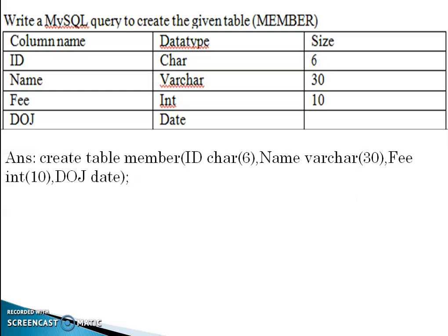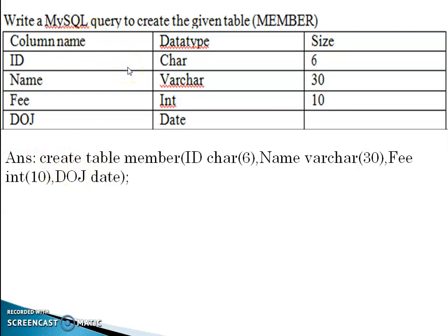Check this example — how to create a table query. Write a MySQL query to create a member table. The column names and data types are: id CHAR(6), name VARCHAR(30), phi INT(10), doj DATE. This is the answer for creating that query.